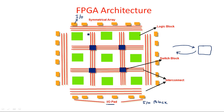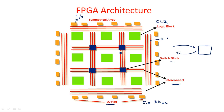The internal green colored blocks are known as configurable logic blocks (CLBs). The red lines are interconnecting wires, used to connect and transfer data among the CLBs. The blue colored blocks are switch blocks or switch matrix, where data can be transferred from a horizontal line to a vertical line. This is the overall FPGA architecture.